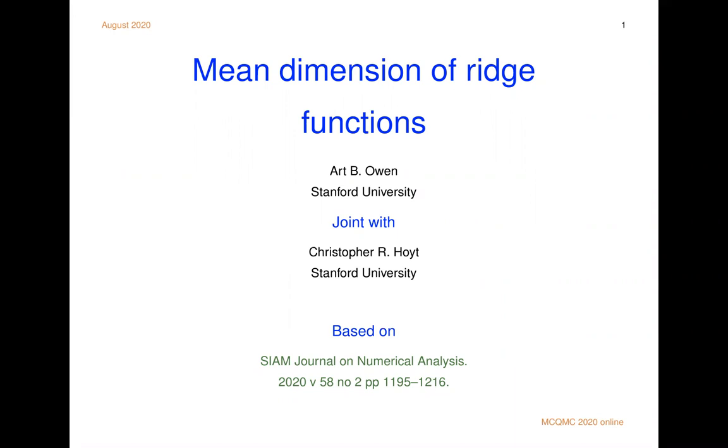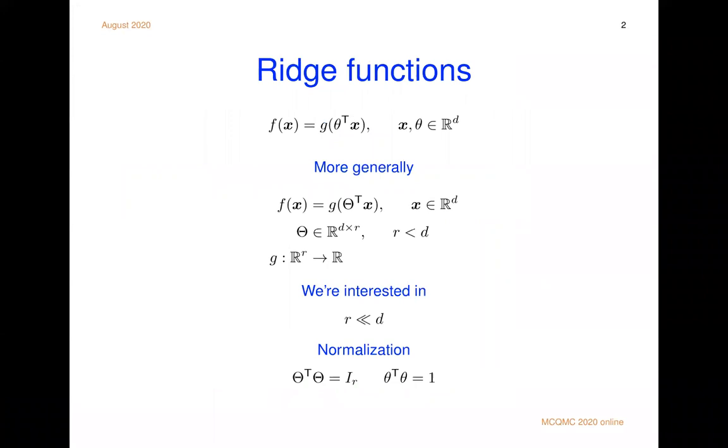First, let me tell you what is a ridge function. We have a function f, x has a d-dimensional space, a d-dimensional domain, and then a ridge function is of the form g of theta transpose x. So in two dimensions, you could actually fold up a piece of paper and it would look normal to theta and it would look like a ridge. Of course, it can also happen in higher dimensions.